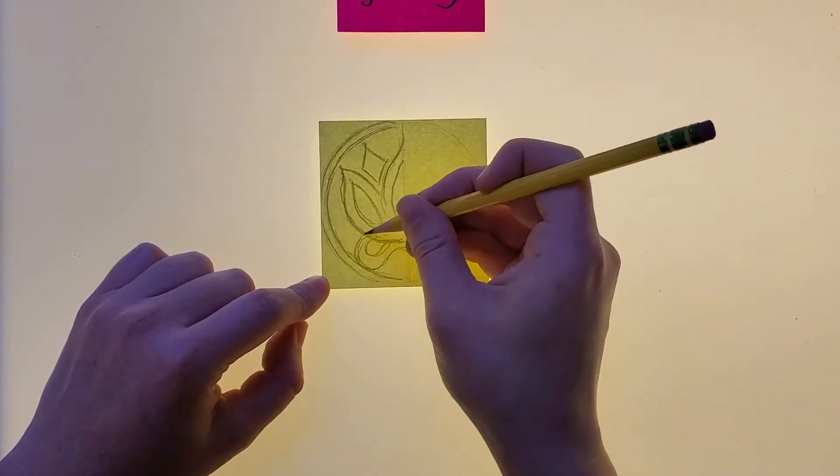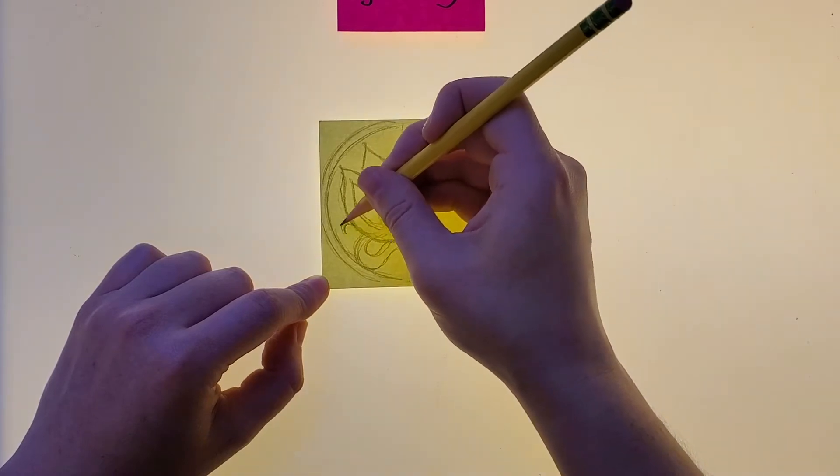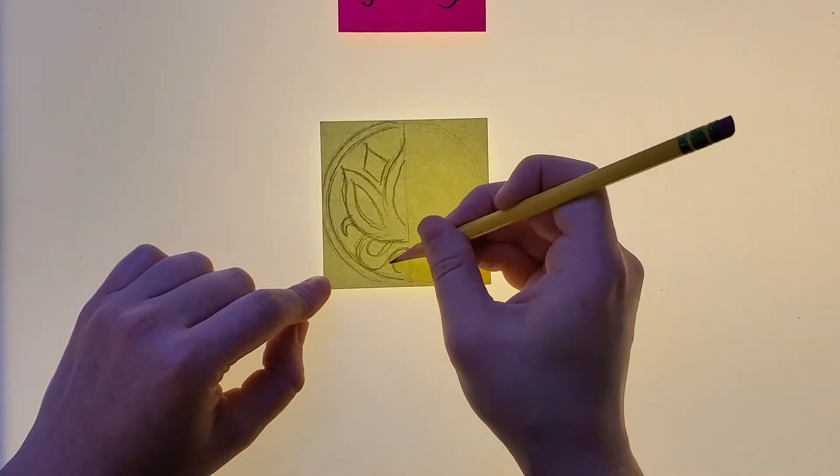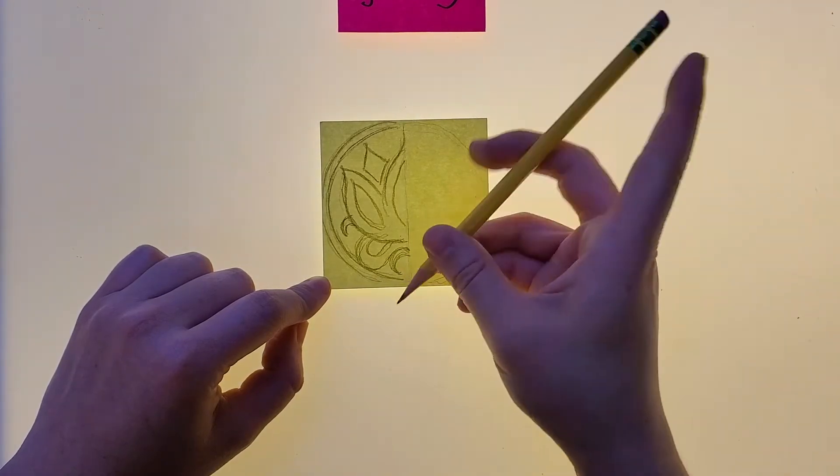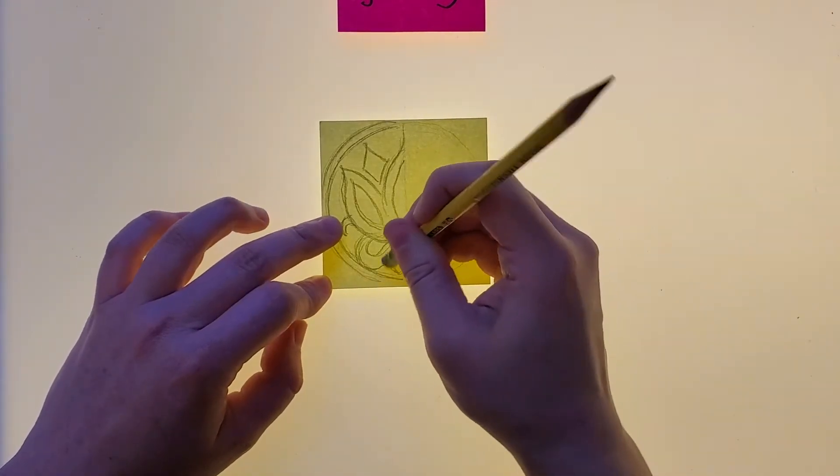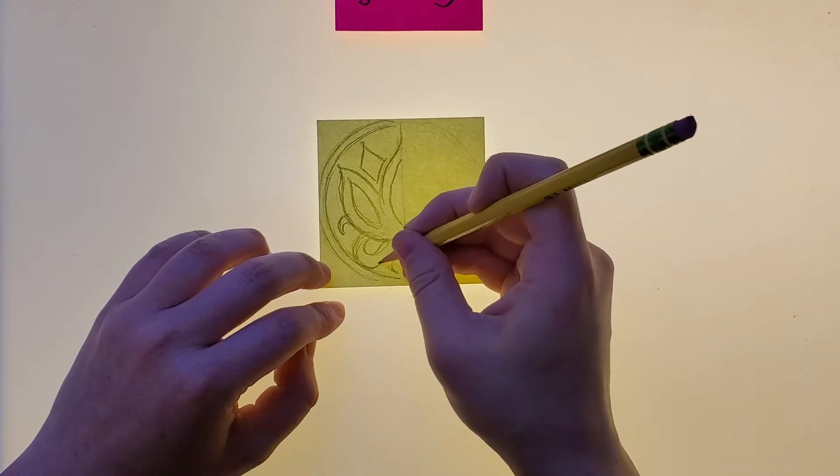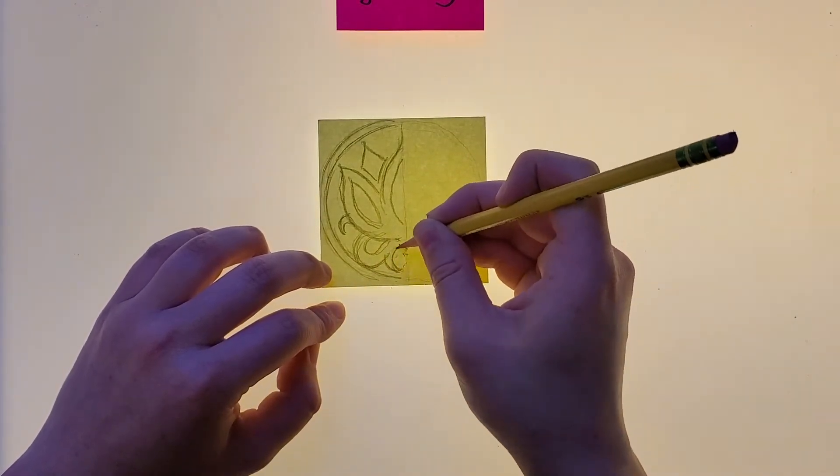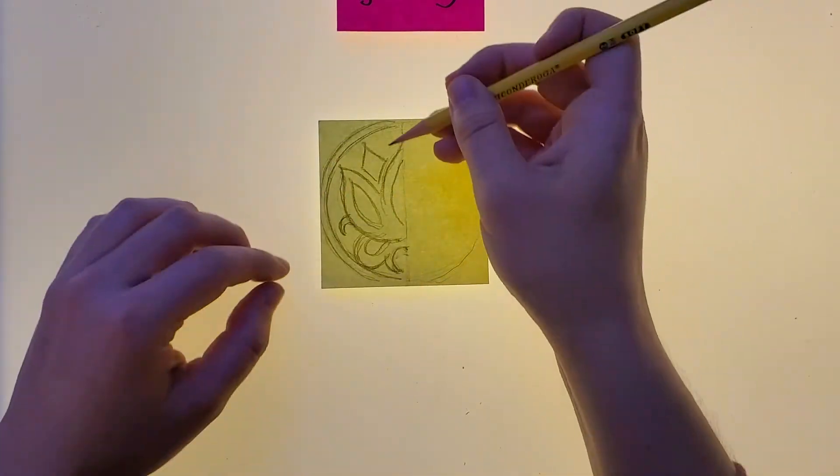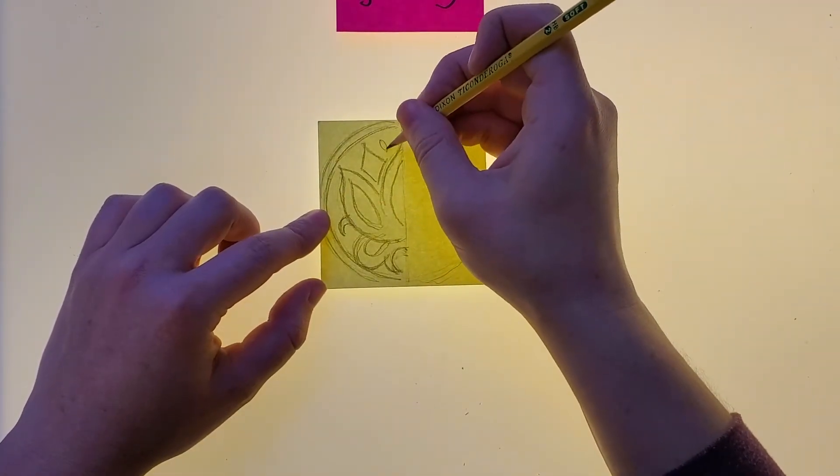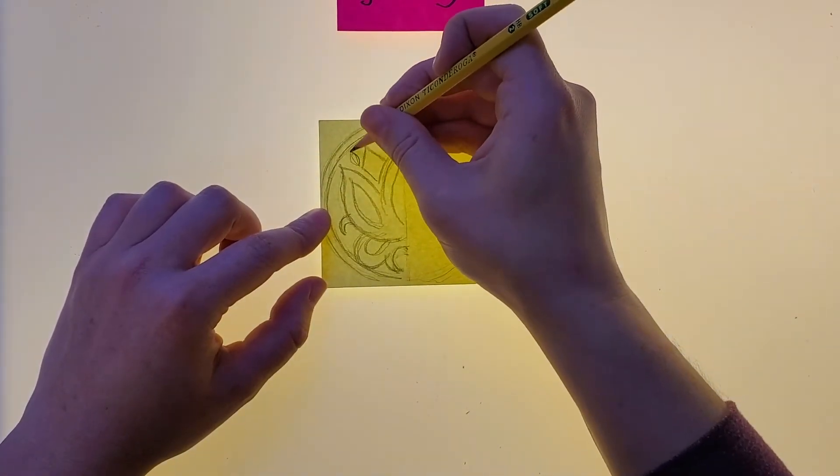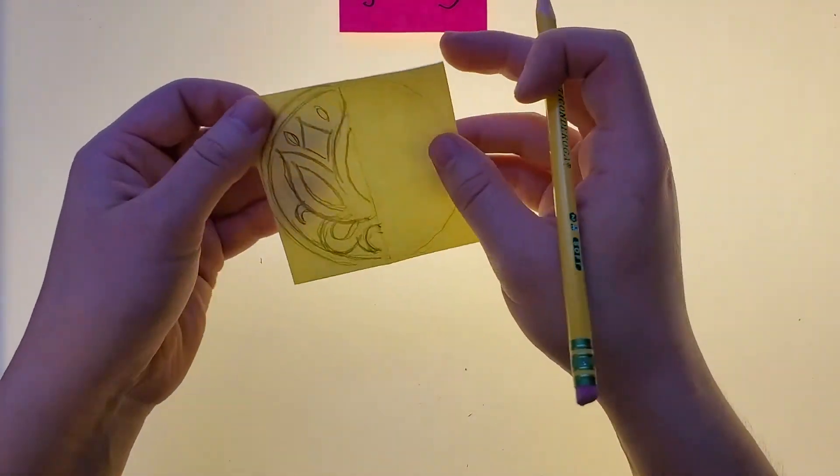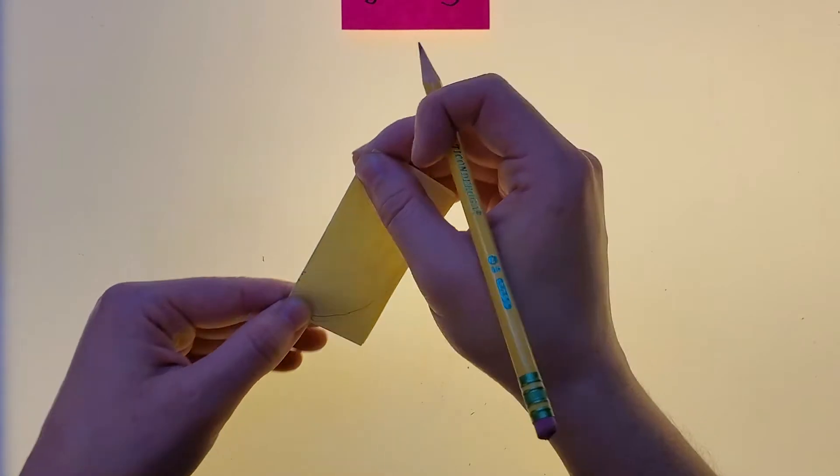Now I'm using a tracing table because in a little bit I'm going to have to transfer part of my design. But if you don't have a tracing table, which I would be surprised if you did, you can use the light that comes through your window as a tracing board as well. Now that my design is figured out, and again you can use a window and hold this up to a window and do the same thing, maybe tape it down.